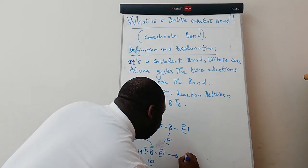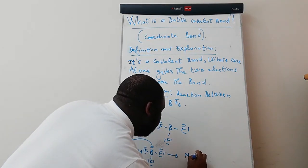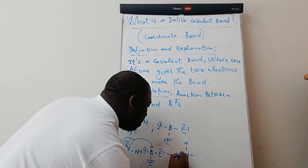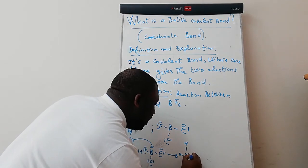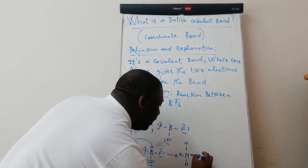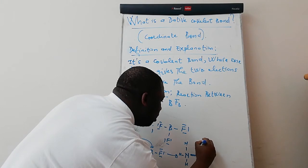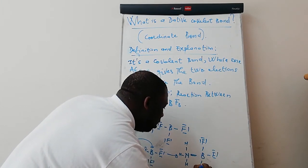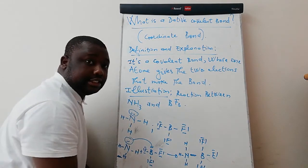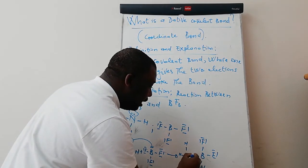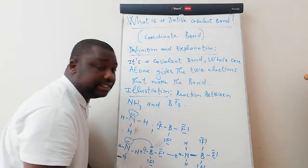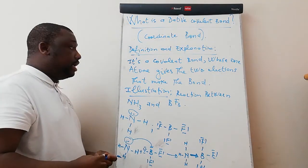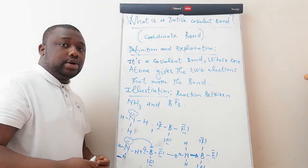So what do we get? We get this. It comes and makes this dative covalent bond. This is your dative covalent bond here, and most of the time, they also represent it as an arrow. That's it. Thank you guys for watching, and make sure you subscribe.